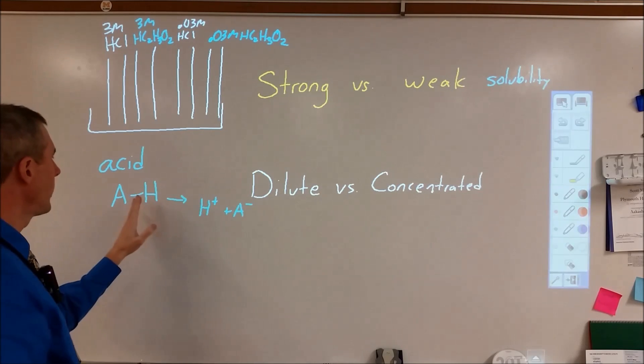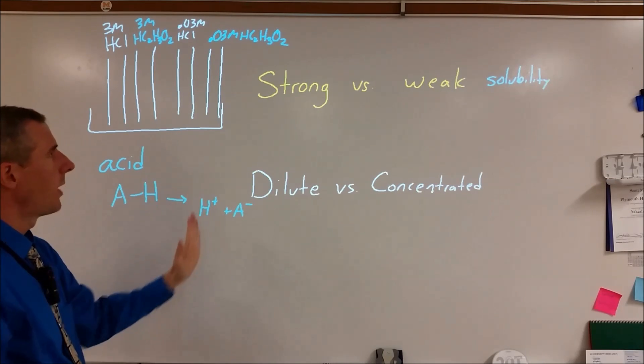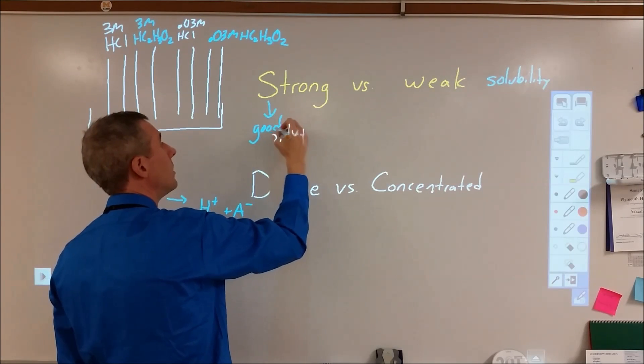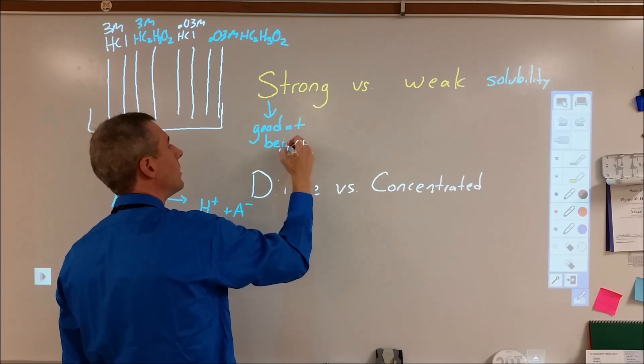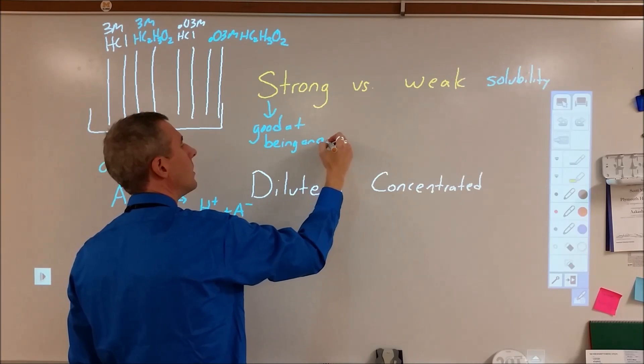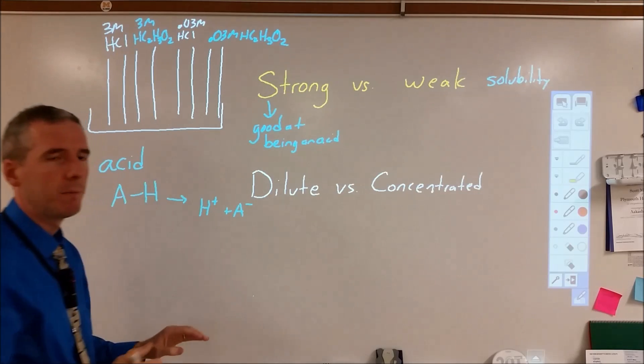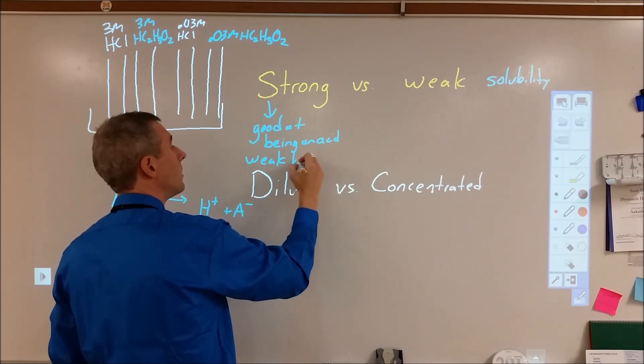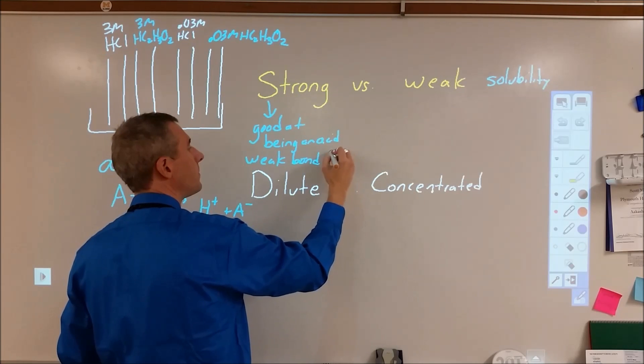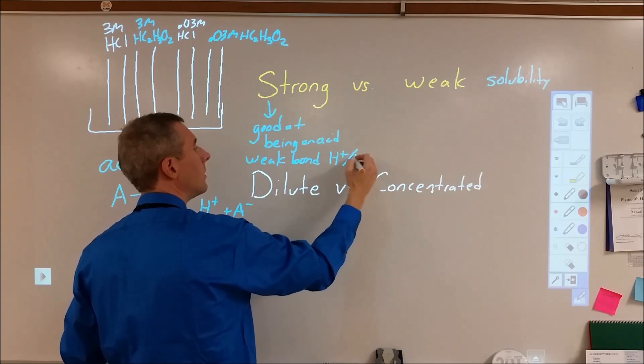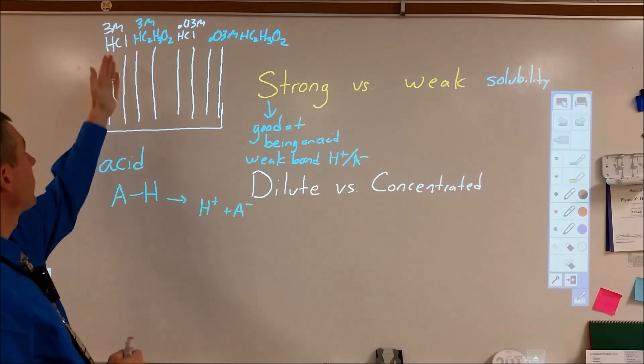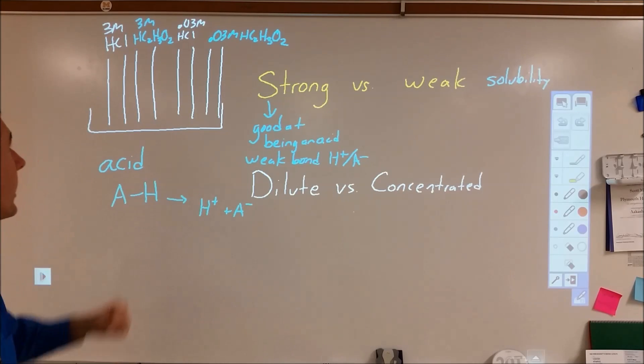So when we say strong and weak, we're looking at the ability to have that bond break. And so strong is something that's good at being an acid. And there are a number of ways to define that, one of which is that it has a very weak bond between the conjugate base and the H+, that we call the conjugate base A-. So in this particular case, the hydrochloric acid has a weaker bond than the ethanoic acid or acetic acid has between the H+ and the conjugate base.